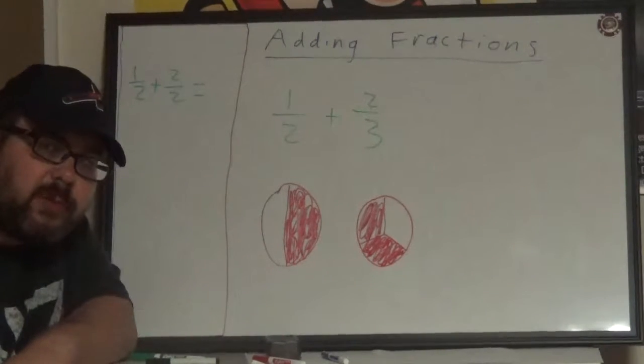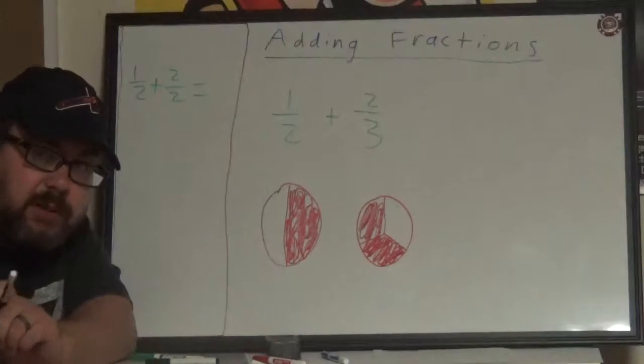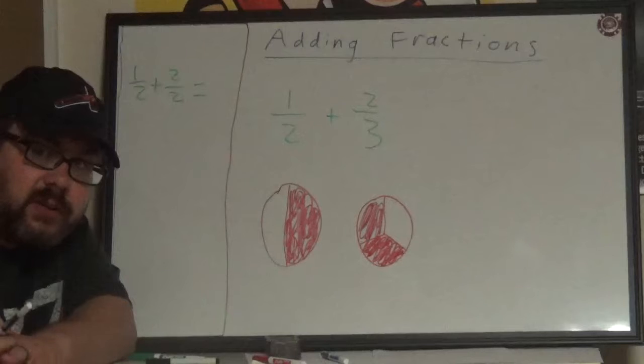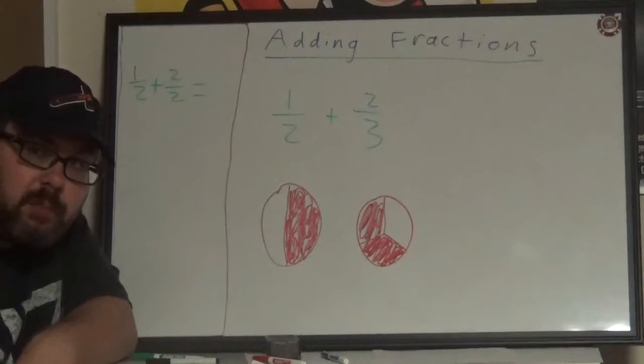Hey, this is Mr. Coker with Foundations of Algebra lesson 2.2, Adding Fractions. To begin with, I want to remind you that when we're talking about fractions, the number on top is called the numerator and the number on bottom is called the denominator.